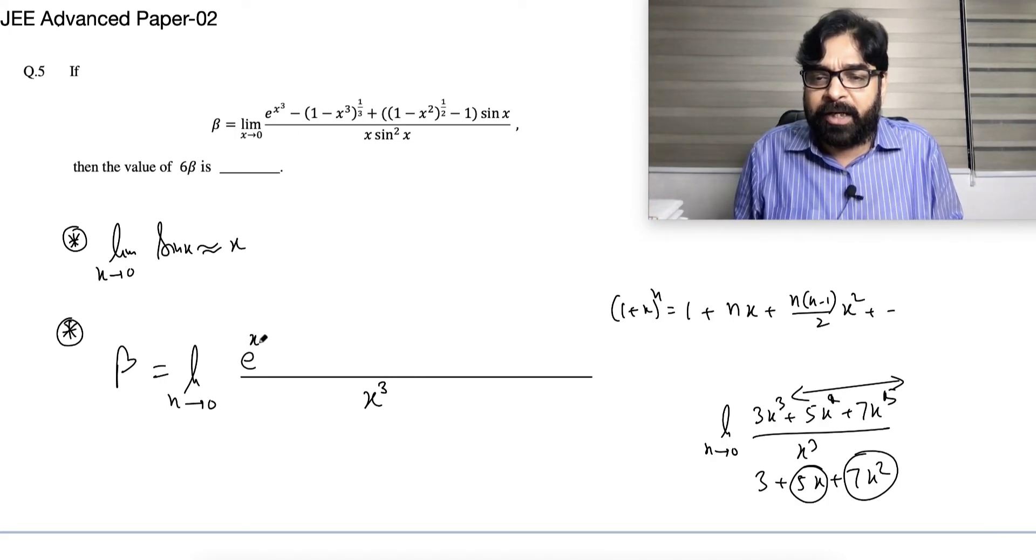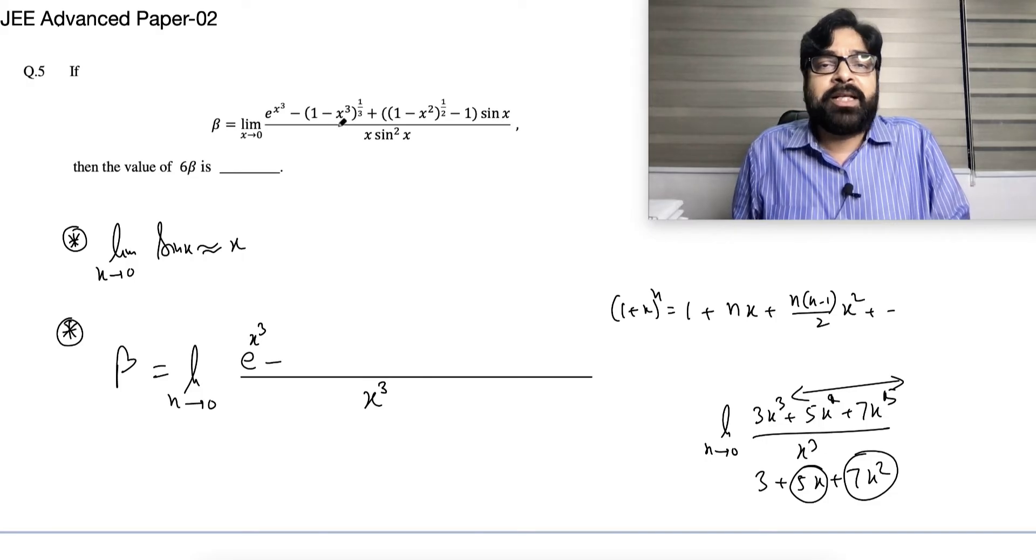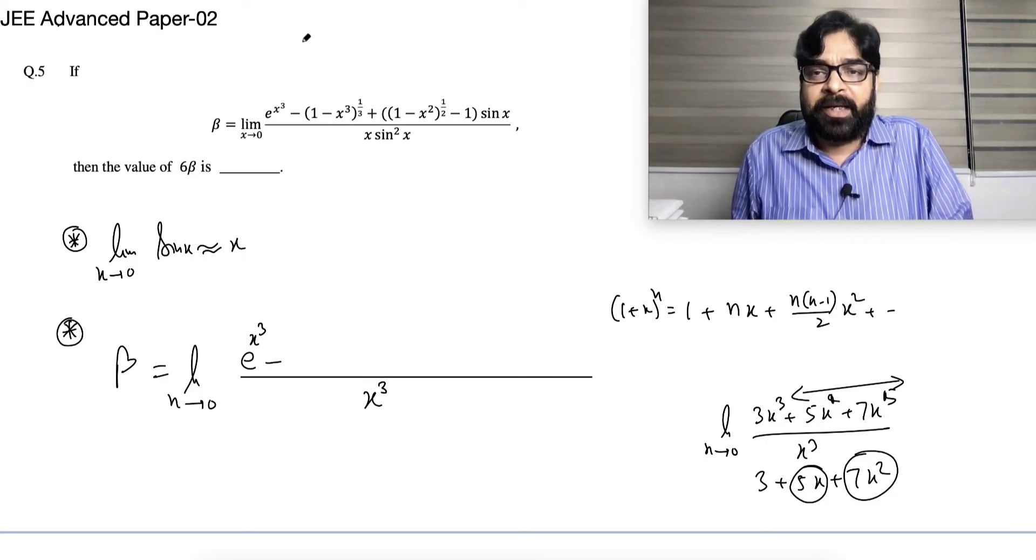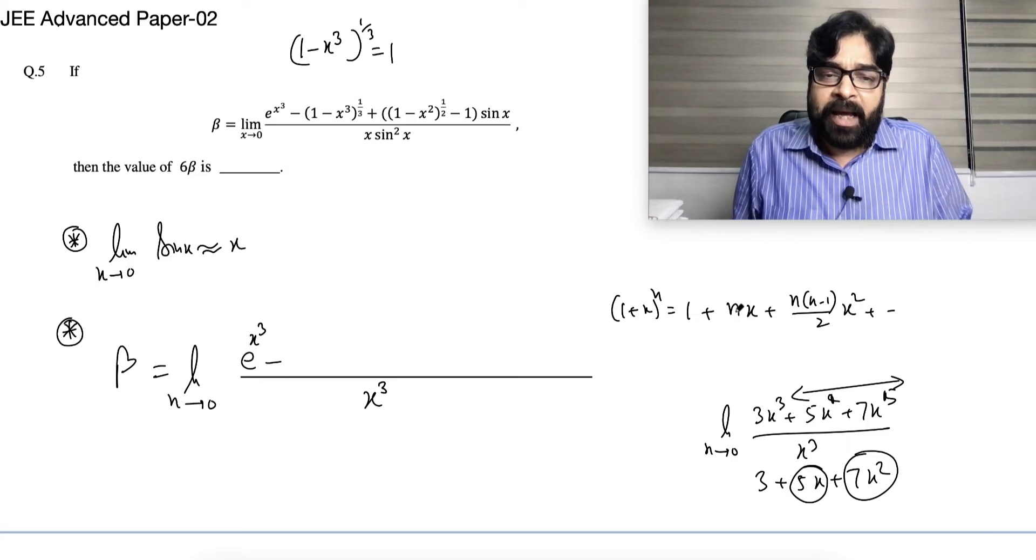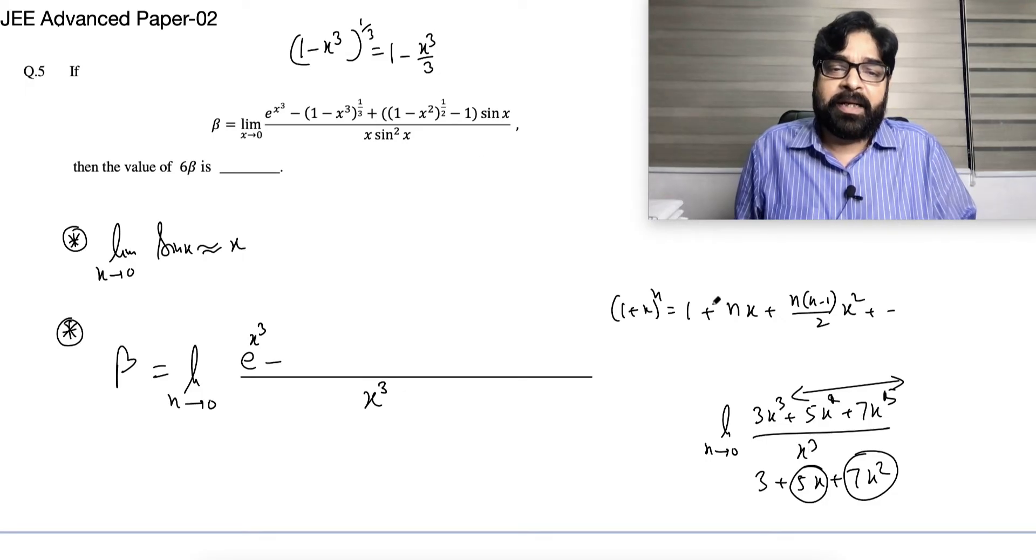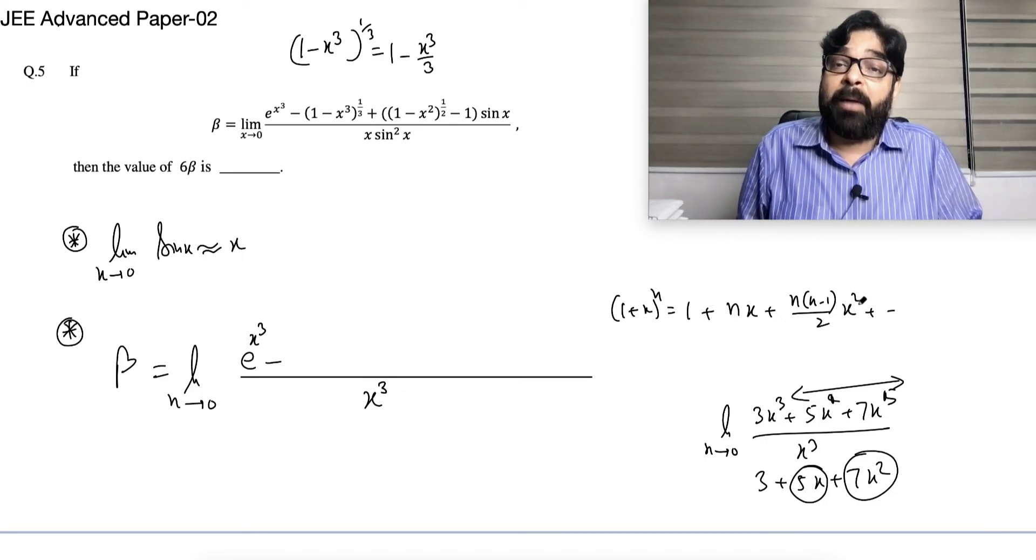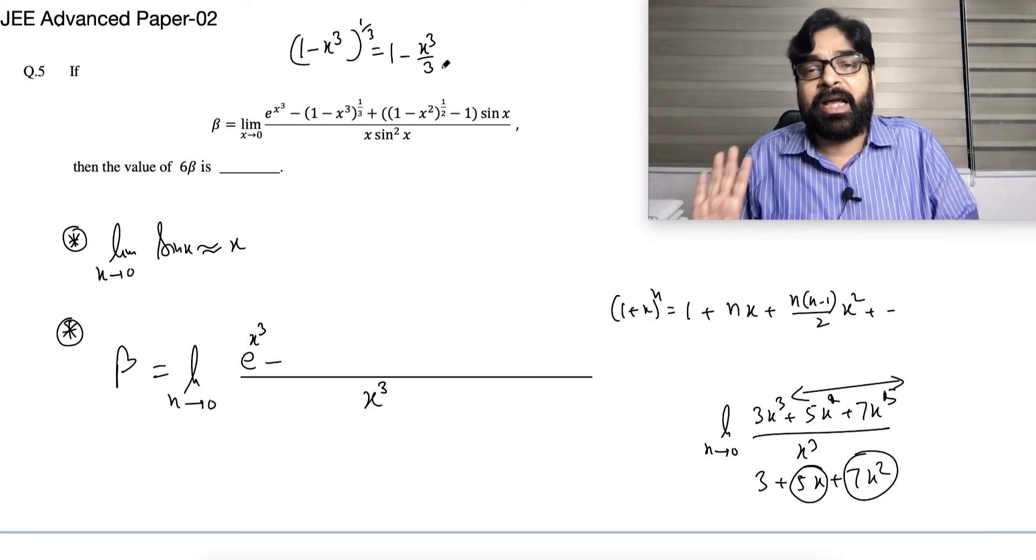e power x³, nothing I can do, let it be like that. Minus, watch it carefully, (1 - x³)^(1/3). Can I use this formula? Yes. n is 1/3, x is x³, 1 minus x³ by 3. Next term will be x³ power 2, because x is x³, so that I will not write, so this much only I will write, that's all.